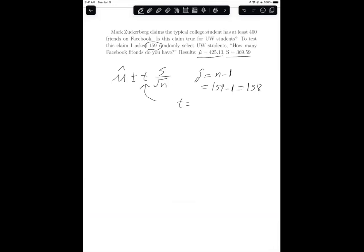So our t equals 1.984. So then I'm going to take 425.13 plus or minus 1.984 times 369.59 divided by the square root of 159.